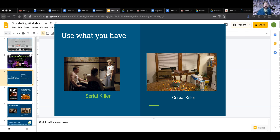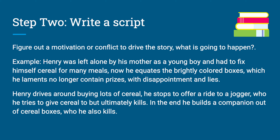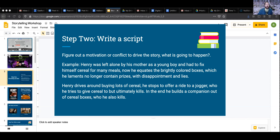Step two is write a script, and what that really means is come up with a story. Even if you have a ridiculous concept, your story needs something to ground it to reality. Because the more ridiculous your concept, the more you need something to make the motivation or the conflict believable. Even in the most ridiculous of circumstances, people are looking for something to engage with, and so you need some kind of human motivation.